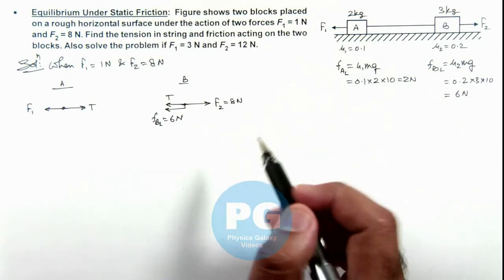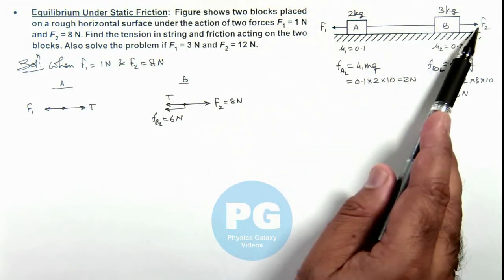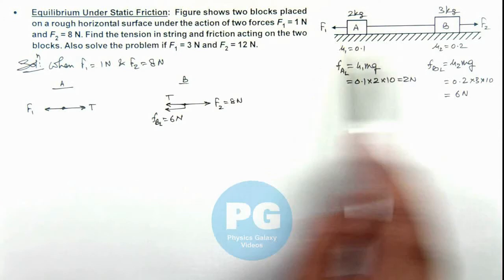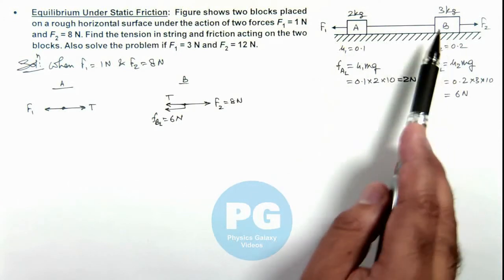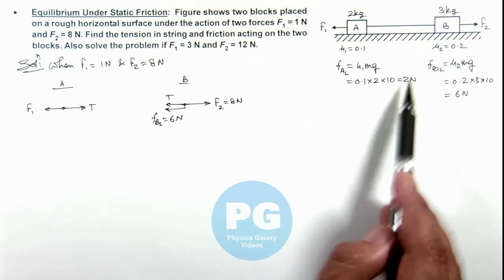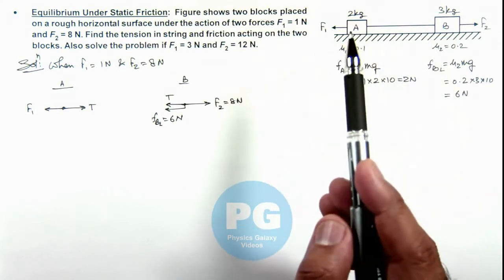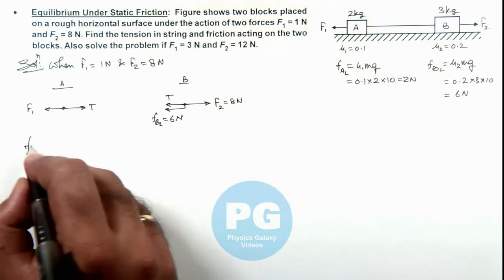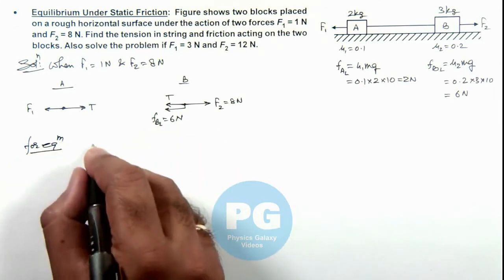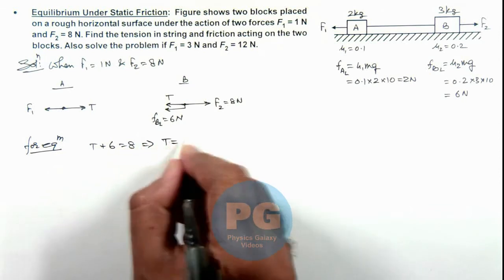We can also state the net external force acting on the system: toward right it is 8 newton, toward left it is 1 newton, so effectively a 7 newton force is acting on it. The total limiting friction for sliding of these blocks is 6 plus 2 equals 8 newton, which means the blocks will remain at rest. So for equilibrium we can write: T plus 6 equals 8, which implies the value of tension is 2 newton.